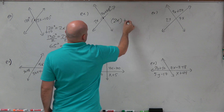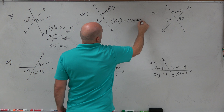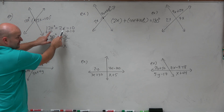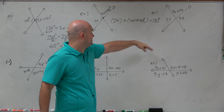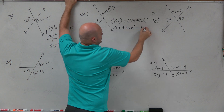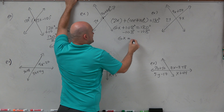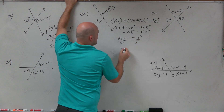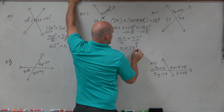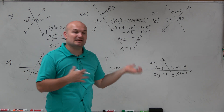I'm going to write 2x plus 4x plus 108 degrees equals 180 degrees. Instead of the angles equaling each other in measure, the sum of them equals 180 degrees. Combining the algebraic terms: 6x plus 108 equals 180. Subtract 108 from both sides: 6x equals 72. Divide by 6: x equals 12 degrees. You could then check your work by plugging x back in to make sure they both add up to 180.